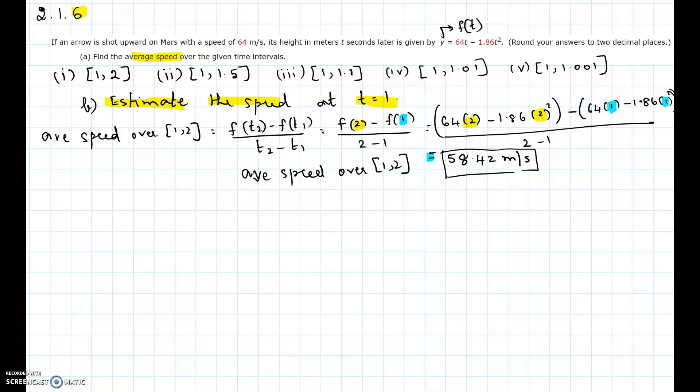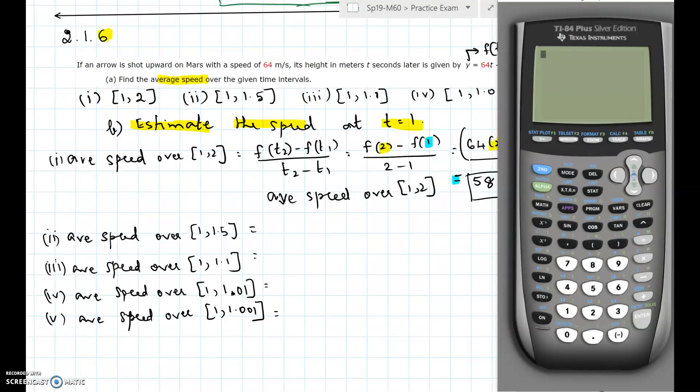You can compute this one in the calculator and we find out the average speed over 1 through 2 is 58.42 meters per second.